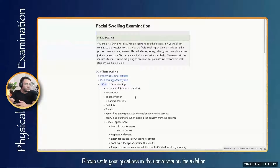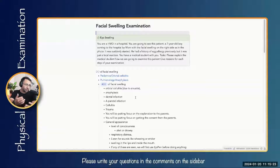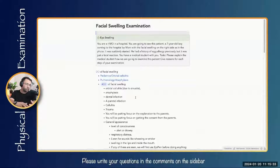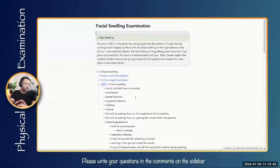The next case we are going to discuss is facial swelling examination. This is a bit tricky one because facial swelling could mean a lot of possible differentials. It could depend on whether it is unilateral or bilateral. The information we have got from the recalls is not that comprehensive. We'll assume this is a case of bilateral eye swelling, but we also have to consider the possibilities of unilateral swelling as well.